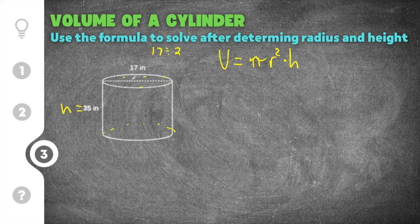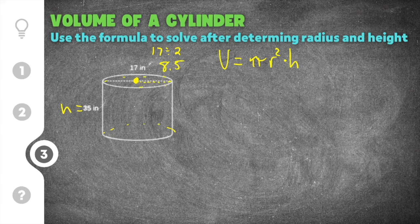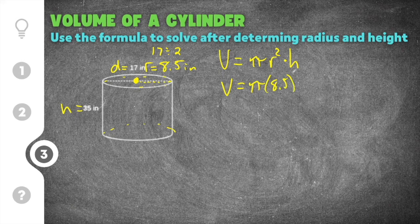We divide by two because the radius goes from the middle of the base to the edge, while the diameter is the whole length — it's twice the length of the radius. So 17 divided by two is 8.5. The radius is equal to 8.5 inches. We changed it from diameter to radius by dividing by two, and now I know both the radius and the height.